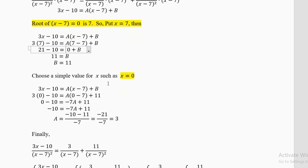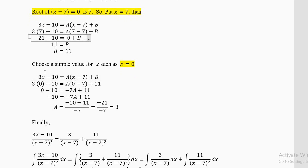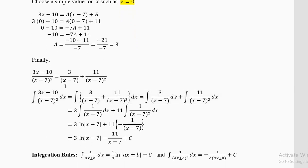To find A, choose a simple value such as x = 0. With B = 11: left gives 3(0) − 10 = −10; right gives A(0 − 7) + 11 = −7A + 11. So −10 = −7A + 11, giving −7A = −21, A = 3. The partial fractions are 3/(x − 7) plus 11/(x − 7)².